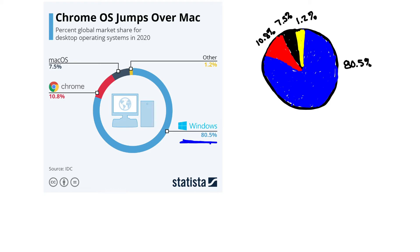The Chrome operating system takes up 10.8% of our pie. The Mac OS takes up 7.5% of our pie. And other operating systems take up 1.2%. All combined, when you add those percentages up, you should get 100%.